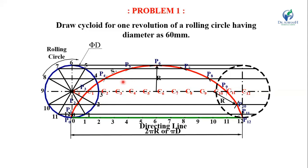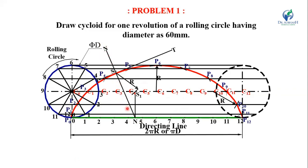Join all points P0 through P12 by a smooth curve — this curve is known as a cycloid. To draw the tangent and normal at point S on this curve: with S as center and radius equal to the rolling circle radius, draw an arc intersecting the center line at S1. From S1, draw a perpendicular to the center line intersecting the directing line at N. Join N to S — this is the normal. A line perpendicular to the normal through S is the tangent.